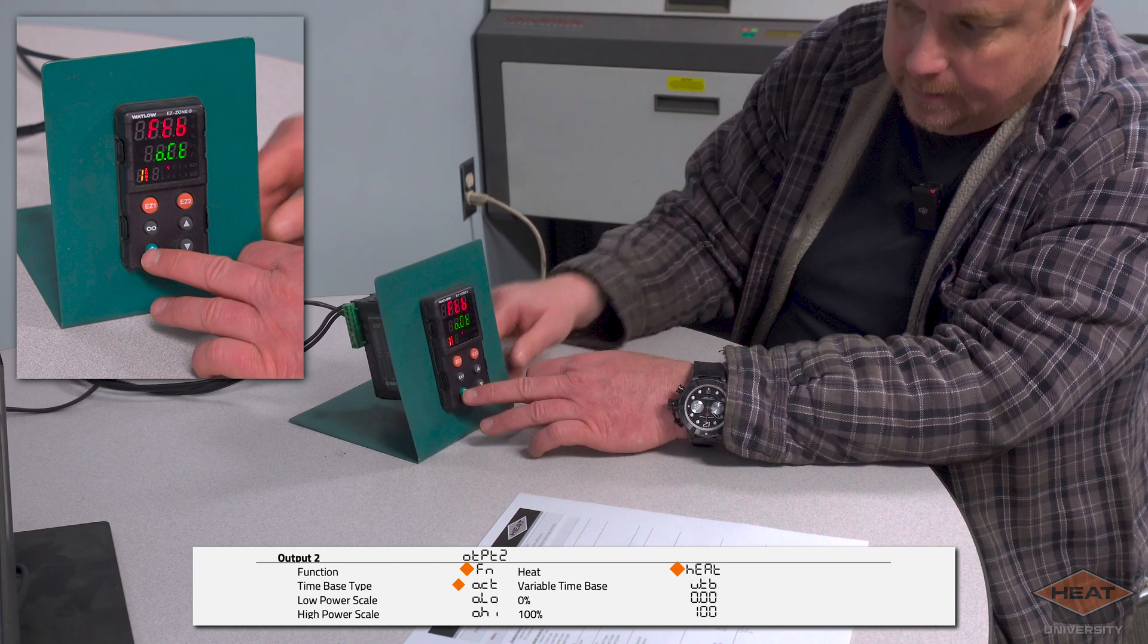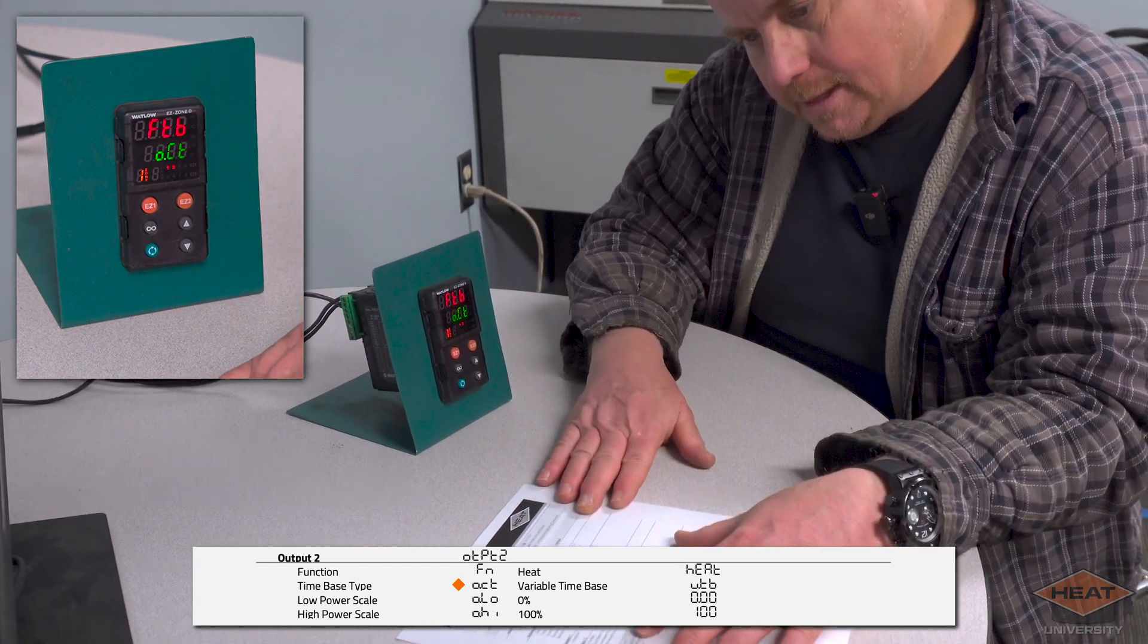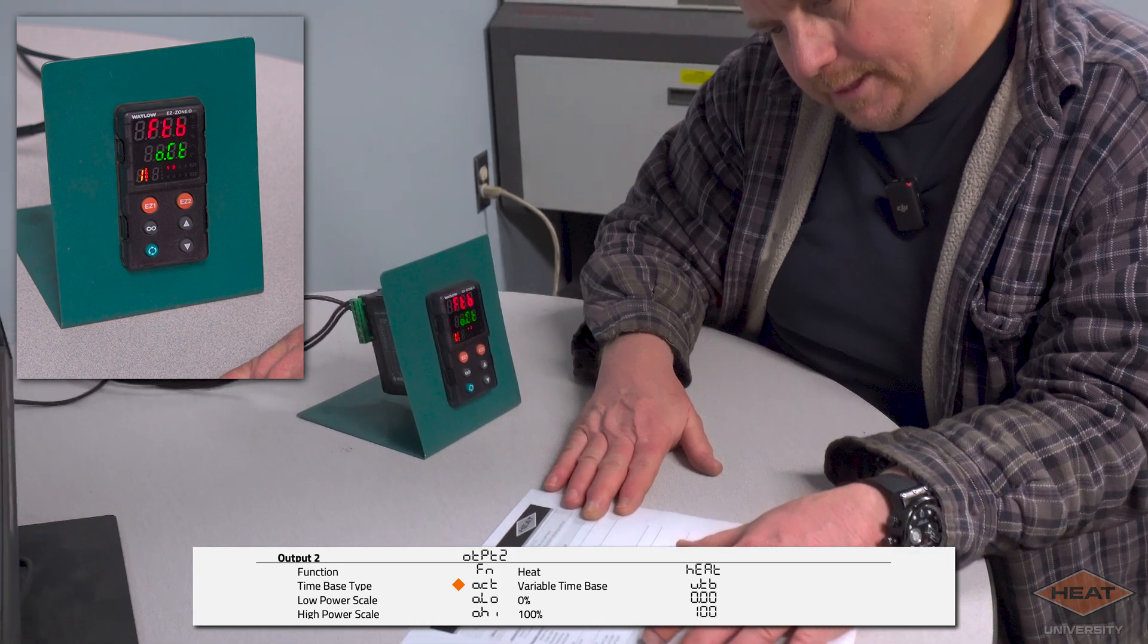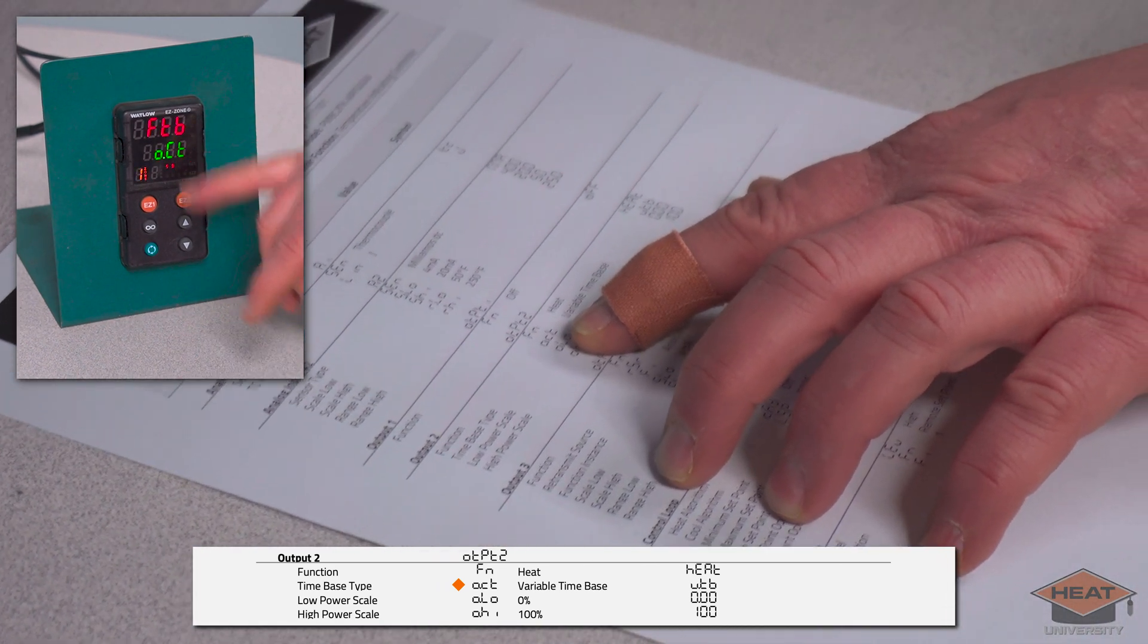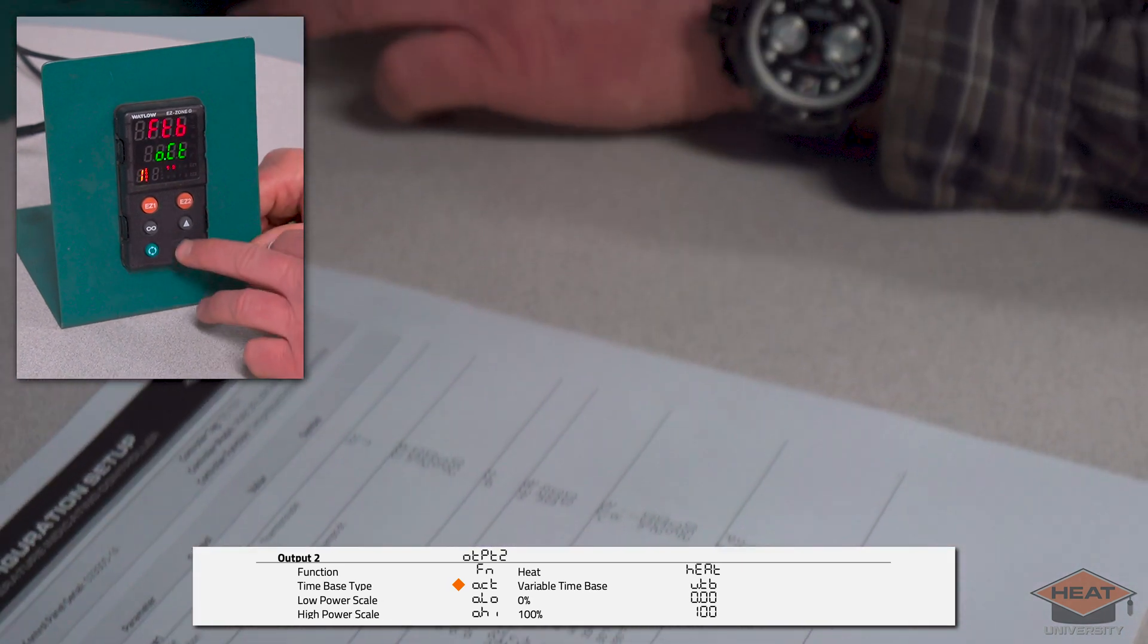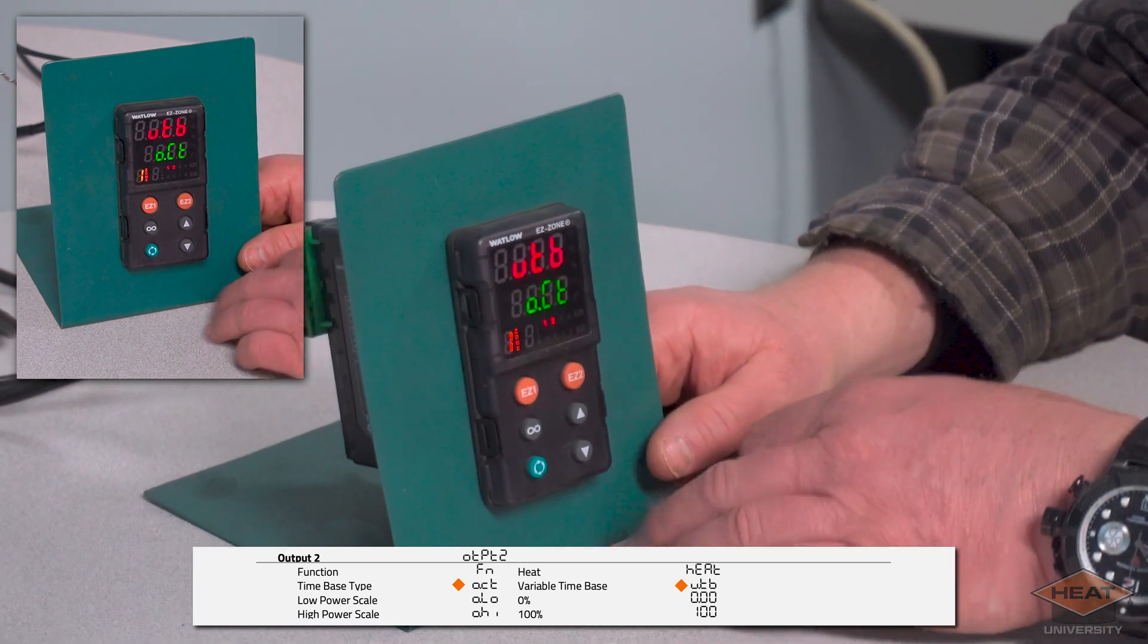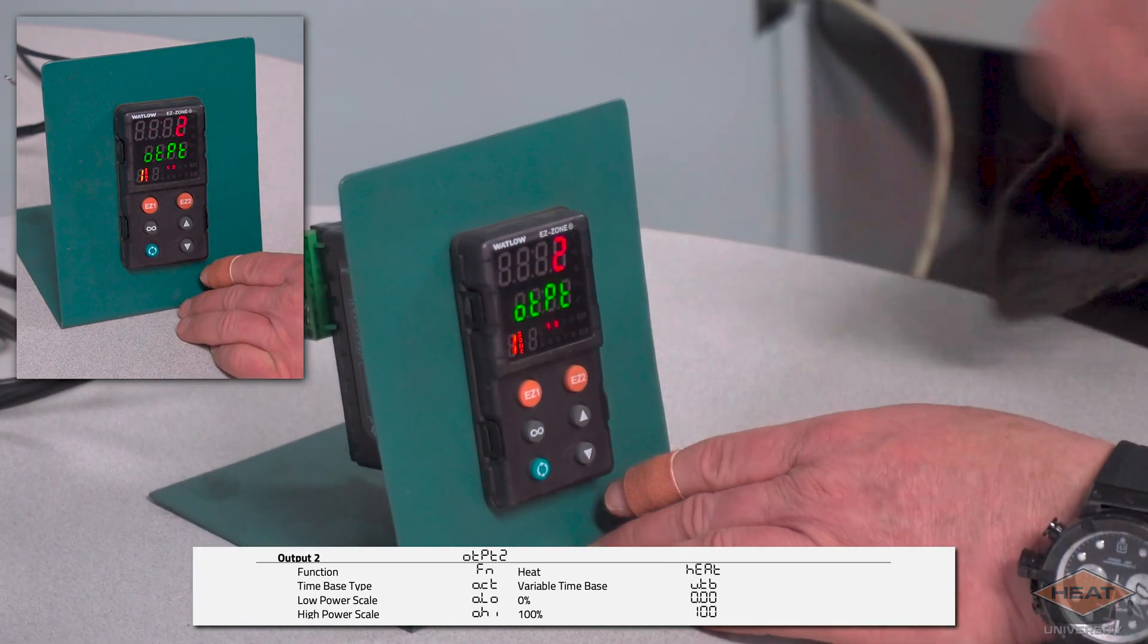Then I'm going to hit the cycle button. It comes up alarm, so we're going to cycle down through off, cool, heat. We're going to select heat. Then this right here, our output time base—I don't know if you can see this—it's our time base type OCT, and then we want variable time base.